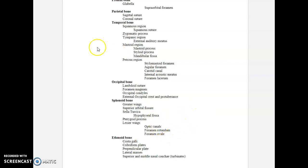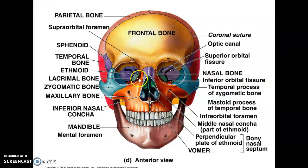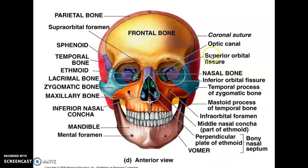Looking at the optic canal from the other perspective — here it comes out underneath the lesser wing area, close to the foramen rotundum. Looking back in the orbital of the eye, with the sphenoid bone shown in purple, I've got the superior orbital fissure, but there's also a round hole right in the very corner — that is the optic canal. Our eyes sit in here, so the optic nerve runs at an angle through that hole and comes out on the other side underneath the lesser wing.